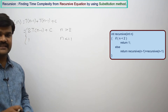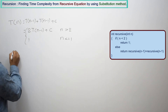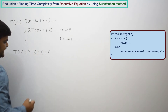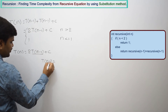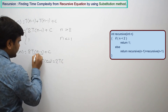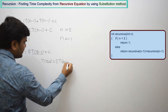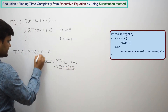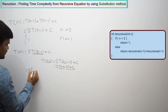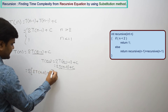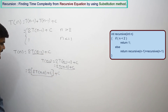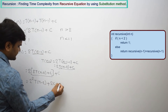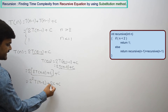Now let us try to find out the time complexity by using the substitution method. Take T(n) = 2T(n-1) + c. To find T(n-1), substitute n-1 in place of n: T(n-1) = 2T(n-2) + c. Substitute this back: T(n) = 2[2T(n-2) + c] + c. If you expand this: T(n) = 2² T(n-2) + 2c + c, which equals 2² T(n-2) + (2²-1)c, i.e., 3c. So we can write it equivalently as 2² T(n-2) + (2²-1)c.